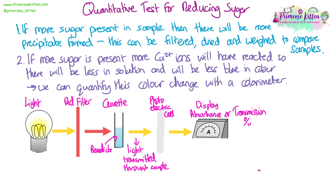The way a colorimeter works is you have a light source and then you have a coloured filter. In this example we have a red filter, and normally this tends to be a colour that is opposite on the colour wheel to the colour of the solution that you are measuring. So we are measuring the depth of the blue colour in the Benedict's solution, and as more of the Benedict's has reacted there will be less blue colour.